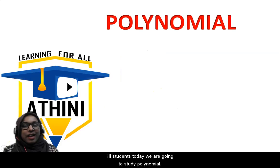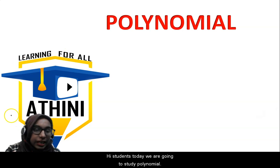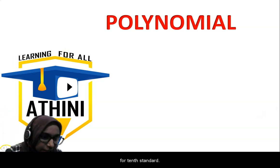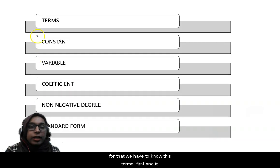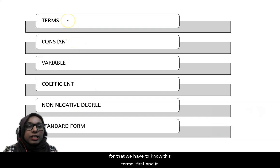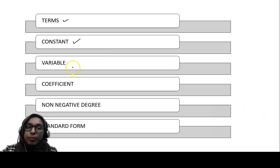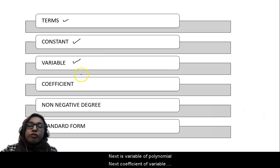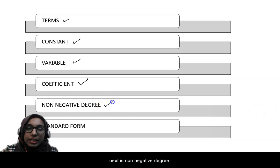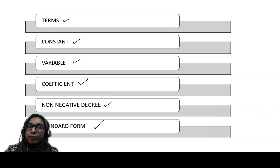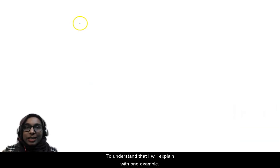Hi students, I am Adini. Today we are going to study polynomials for 10th standard. For that we have to know these terms: terms of a polynomial, constant of a polynomial, variable of a polynomial, coefficient of a variable, and non-negative degree.